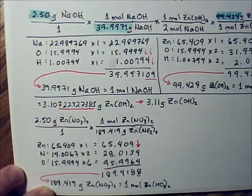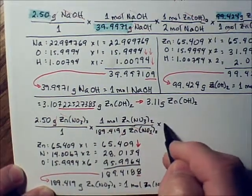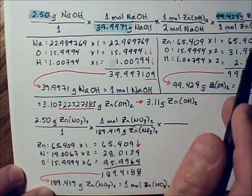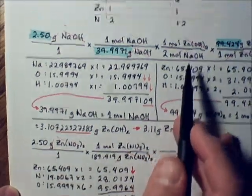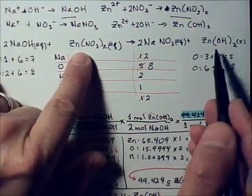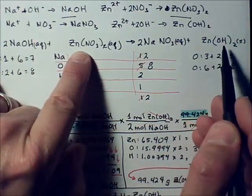Now we want the molar ratio between zinc nitrate and the species we're looking for, and the species we're looking for is the same. We're looking for zinc hydroxide. Zinc hydroxide is the solid up here. The ratio between zinc nitrate and zinc hydroxide is one to one.